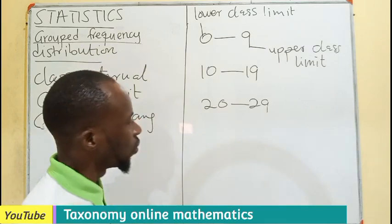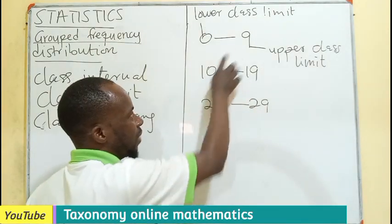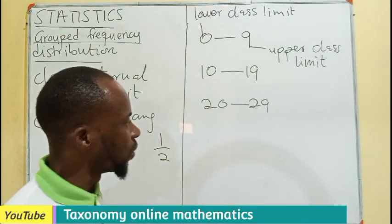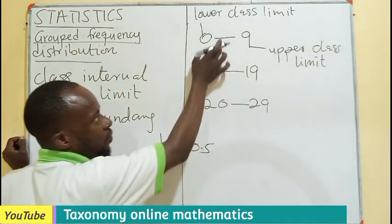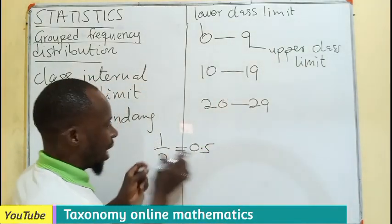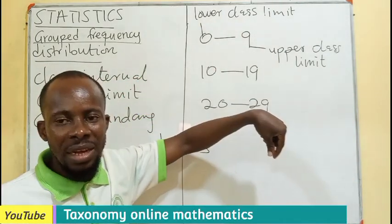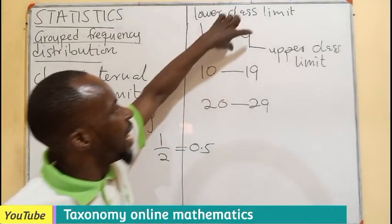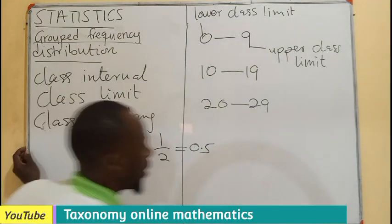We can also find the class boundary by finding the difference between the upper class limit of one class and the lower class limit of the next. For example, 10 minus 9 is 1, so the difference is 1. Divide by two — that gives you 0.5. To get the class boundary, subtract this 0.5 from all lower limits and add 0.5 to all upper limits.